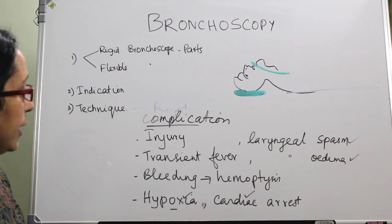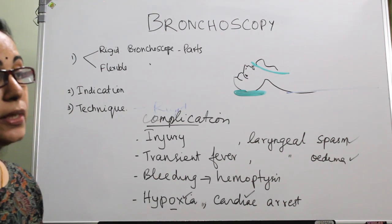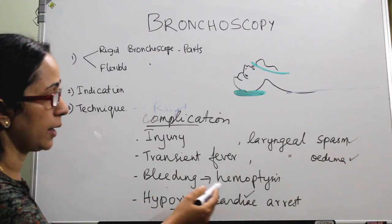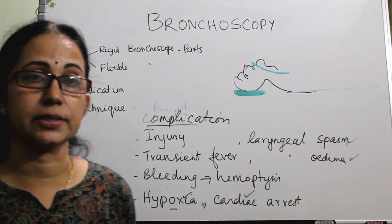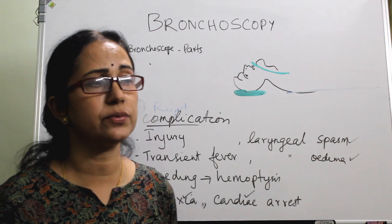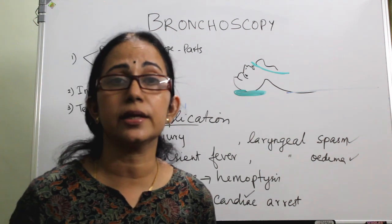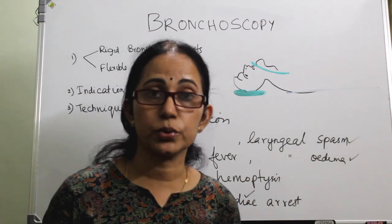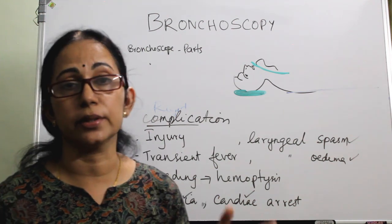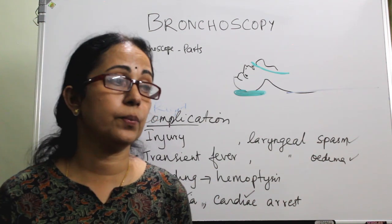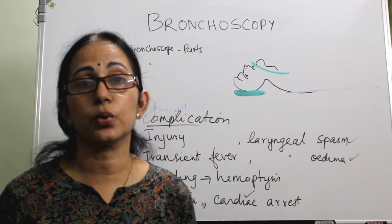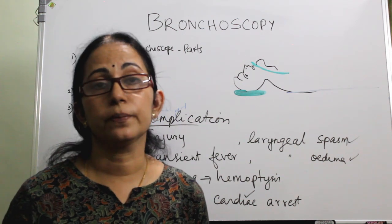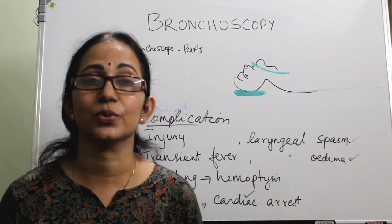Transient fever can occur, especially following bronchoalveolar lavage, and bleeding can lead to hemoptysis. These are the complications. Nowadays, the main indications for rigid bronchoscopy are taking a very large biopsy or removing a very large foreign body. In summary, both rigid and flexible bronchoscopy were covered — the parts of the rigid bronchoscope, the technique of introduction, postoperative care, and complications.